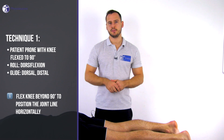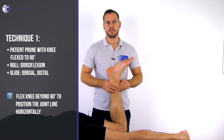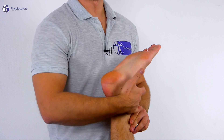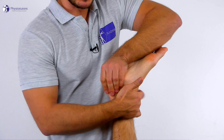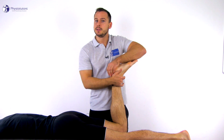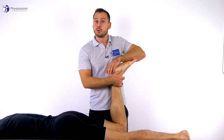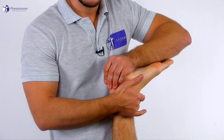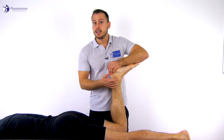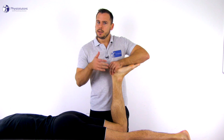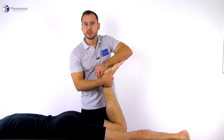For roll-glide assessment, have the patient in prone lying position with the knee bent to 90 degrees. Place your middle finger over the neck of the talus and the other hand over the plantar aspect of the calcaneus. The talus is convex and the tibia is concave, so we roll and glide in opposite directions. The roll of the talus is in a ventral and proximal direction as the tibia is shorter anteriorly, and the glide is going to be dorsally and distally. In this position you can make the joint line horizontal by flexing the knee further than 90 degrees.